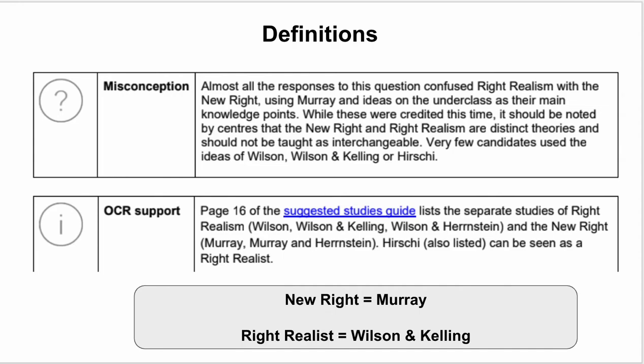So on to the distinction: right realism and the new right are sometimes used interchangeably, but the examiner's report says you shouldn't do that. You need to distinguish between the new right — mainly Charles Murray — and right realism, which is Wilson and Kelling. So try and remember that the new right is Murray and Herrnstein, and right realism is Wilson and Kelling.